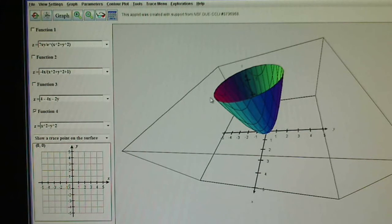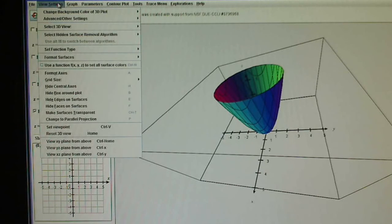Some of the things that we do in Calc 3 is we take a look at cross-sections and contours. Cross-sections occur when you slice our graph vertically, and contours occur when you slice your surface horizontally. I'm going to come up to View Settings and go down to View YZ Plane from Above. They don't really mean from above, they mean from the side, but from above is sufficient.